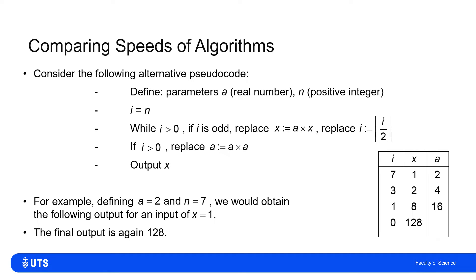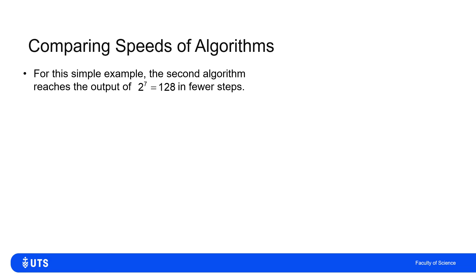That's no coincidence — the second algorithm is doing the same job of multiplying the input by A to the power N, just much more efficiently. Both algorithms calculated 1 times 2 to the power of 7, but one did it in far more steps and the second in far fewer steps.